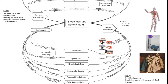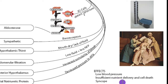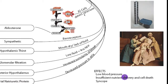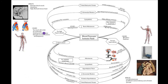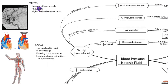The effects of hypovolemia are essentially those of low blood pressure — insufficient nutrient delivery and cell death. Anytime mean arterial pressure drops below 60 mmHg, we won't adequately deliver nutrients to our organ systems and they could fail. It could also cause fainting. In hypervolemia, damaged blood vessels can lead to aneurysms, ballooning of blood vessels that can burst, and in the brain, neurons can be stunned or killed. High afterload stresses the heart, leading to hypertrophy and potentially congestive heart failure.